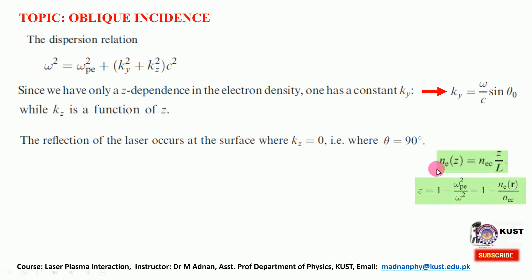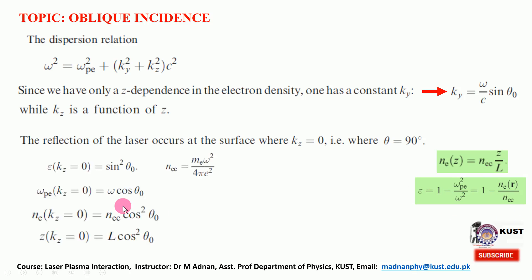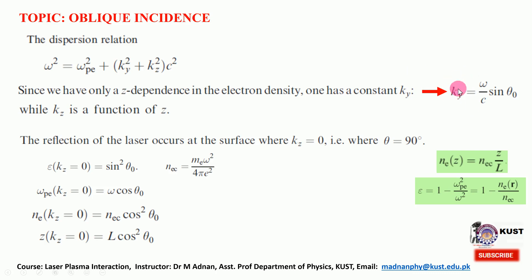The density has a linear profile increasing with z, and the plasma dielectric function is given by epsilon equals one minus omega_p squared over omega squared, expressible in terms of densities. Following the dispersion relation, ky is constant and kz changes, so the wave reflects at a point. At that reflection point the plasma dielectric function equals sine squared theta_0.